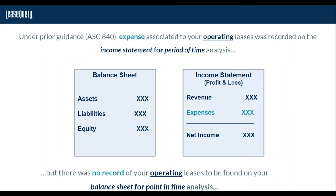Under ASC 840 and the other legacy accounting standards, leases were broken up into two categories: capital and operating. Capital leases were required to be reported on the balance sheet, along with the asset for which they were financing the purchase or the use of. But operating leases were not required to be on the balance sheet. Most straight rental agreements for property and other types of equipment were only shown as rent expense on the income statement. An entity may have had multiple agreements requiring rental payments, both significant and insignificant, but those obligations would never show up on the balance sheet.